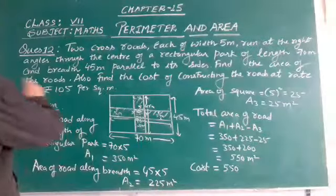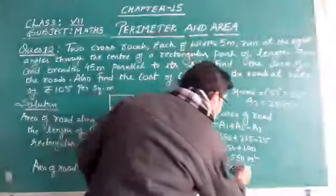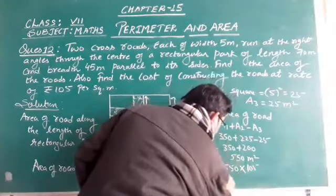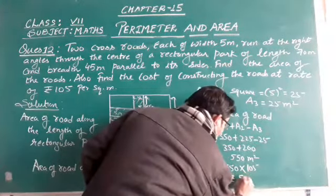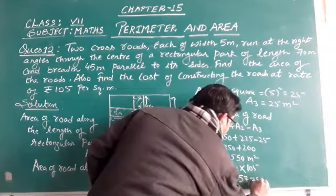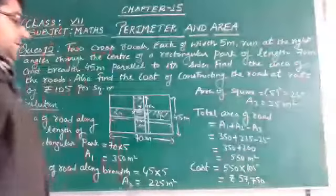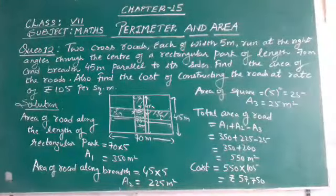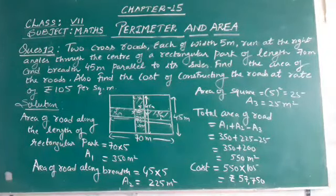And the cost of constructing the road is 550 multiplied by 105, which will be rupees 57,750. So my dear friends, I'm sure that you have understood this question. Thank you very much. Thank you.